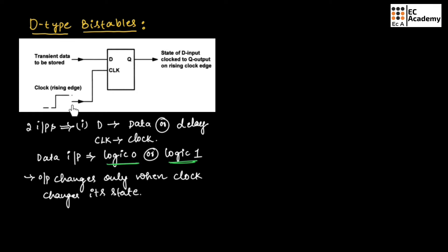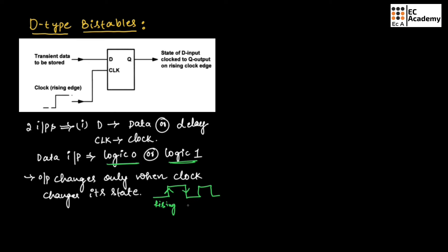The clock can change from high state to low state. Depending upon the state of the clock, the output will change. When the clock is changing from low state to high state, this edge is called the rising edge of the clock. And from high state to low state, this edge is known as the falling edge of the clock.